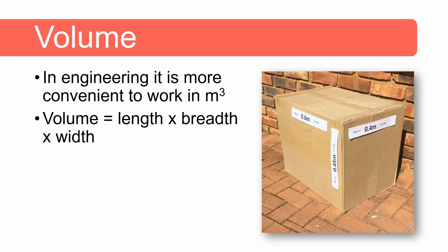For rectangular objects the volume is the length multiplied by the breadth multiplied by the width. The volume of the box in this picture is therefore 0.6 meters multiplied by 0.45 meters multiplied by 0.4 meters and that will give you a total of 0.11 cubic meters.